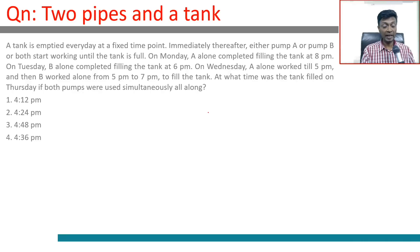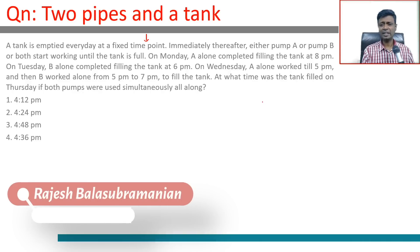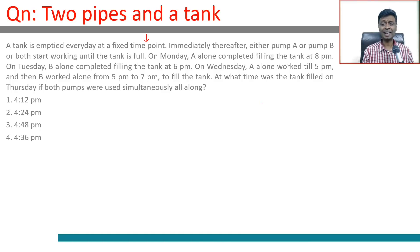The tank is emptied every day at a fixed time point. Immediately thereafter either pump A or pump B or both start working until the tank is full. On Monday, A alone completed filling the tank at 8 PM. So let's say Monday A works for n hours to fill the entire tank.